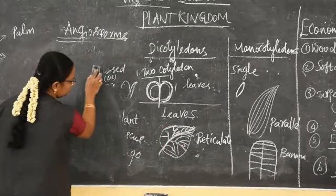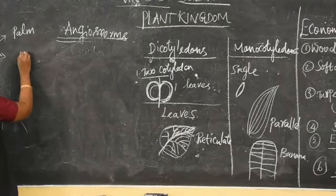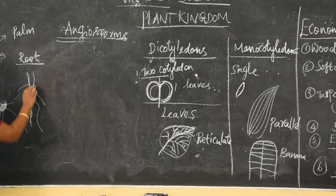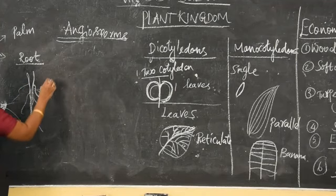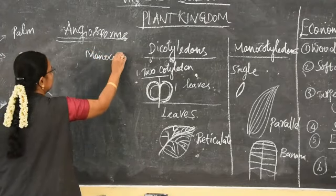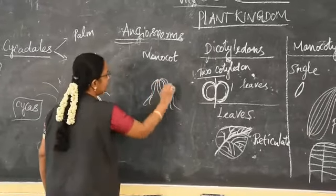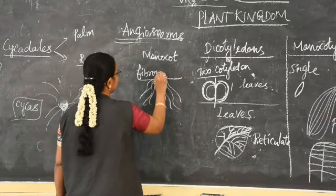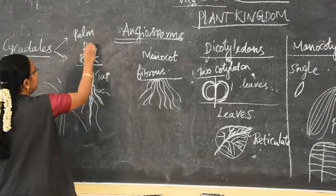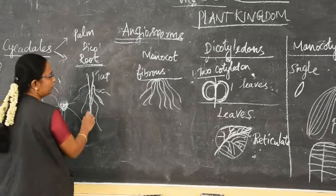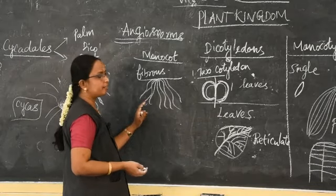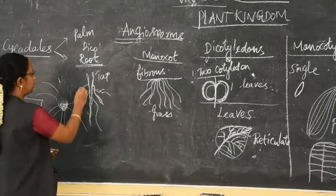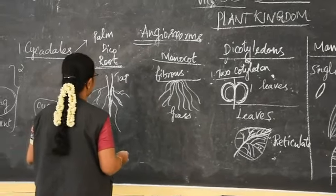When we take about the root of dicotyledon, they show a taproot system. There is a primary root which is divided into secondary and tertiary roots. But in monocot, it is a fibrous root system — tufts of roots arise from the underground soil. So dicotyledon has taproot system, and monocotyledon has fibrous root system. Grasses are an example of fibrous roots. Almost all dicotyledon plants show taproot system.